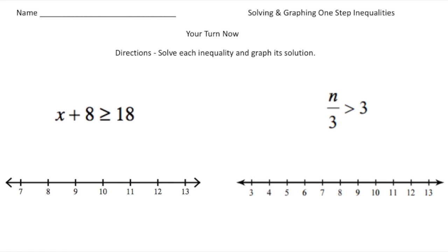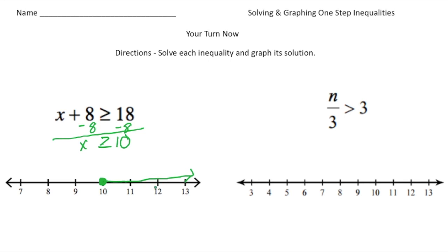Welcome back — let's see how you did with these practice problems. The first inequality: we have a number plus 8 is greater than or equal to 18. We're going to take away 8 from both sides, which leaves us with x is greater than or equal to 10. Because the inequality sign is greater than or equal to, we're going to have a closed circle, and it's going to be all the values to the right — a line going this way. So any value of 10 or greater will make this inequality true.